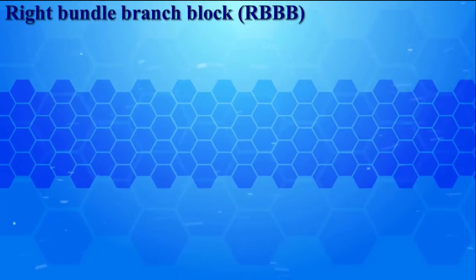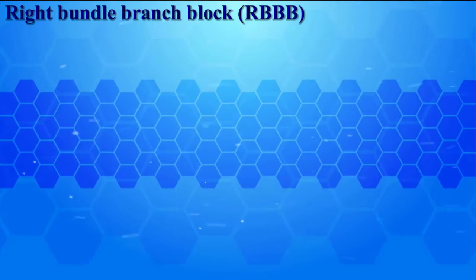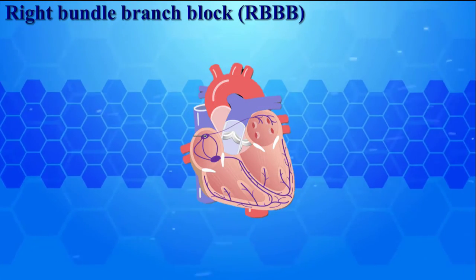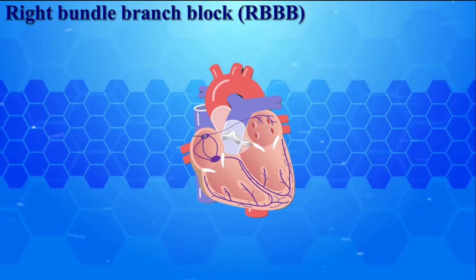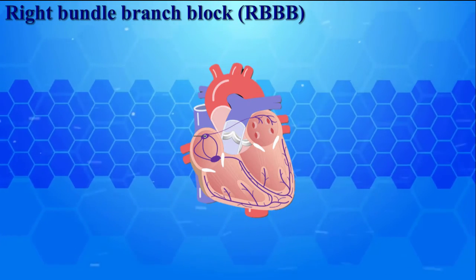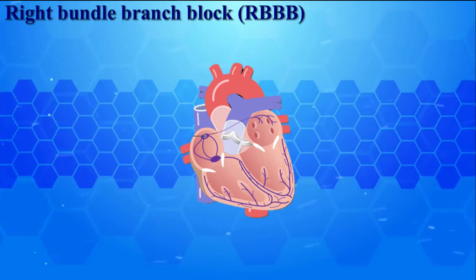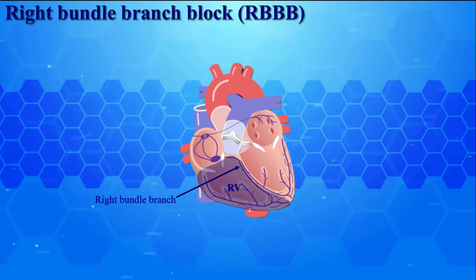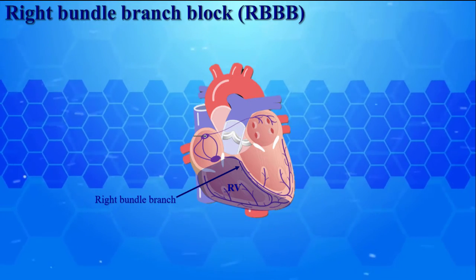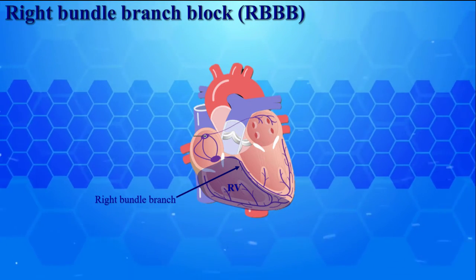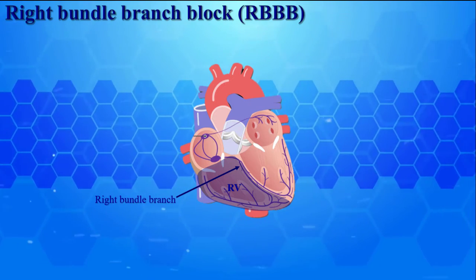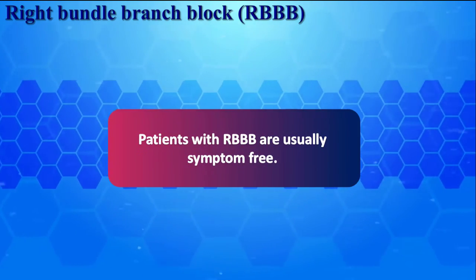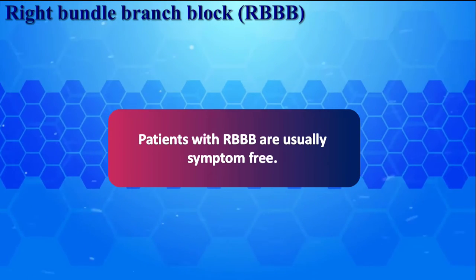As the name reveals, RBBB happens when the right bundle branch does not function properly. Every heart has an electrical conduction system, which is a network of nodes, Purkinje cells, and signals that produce heartbeats. The right bundle branch is in charge of activating the right ventricle. Therefore, presence of RBBB leads to delayed depolarization of the right ventricle. Fortunately, patients with RBBB are usually symptom-free and do not require any extra evaluation.